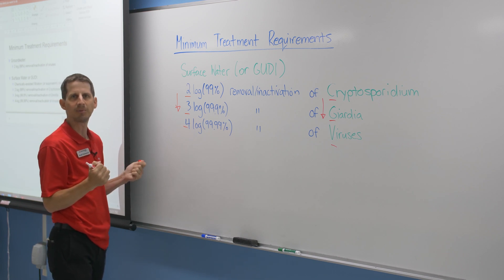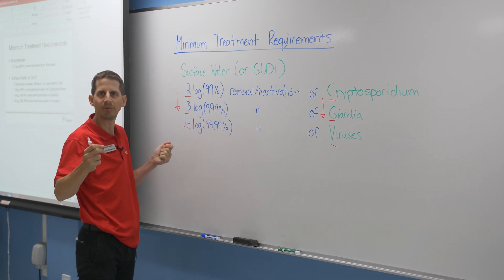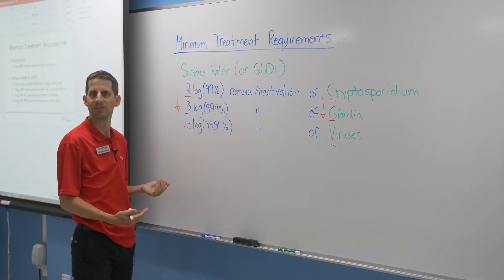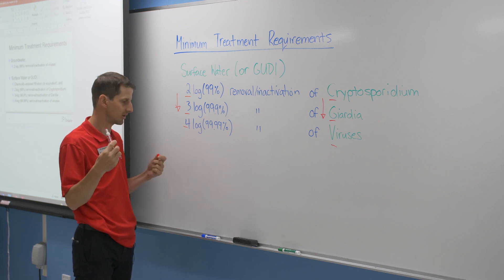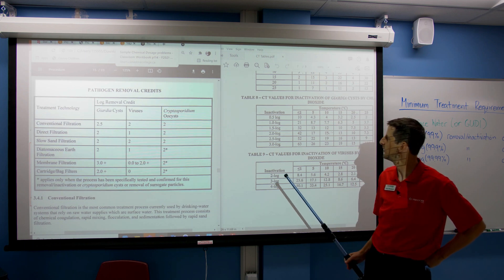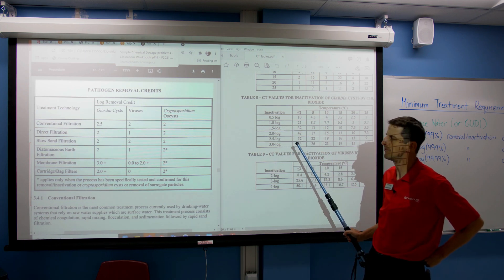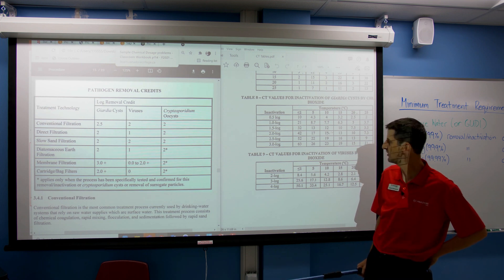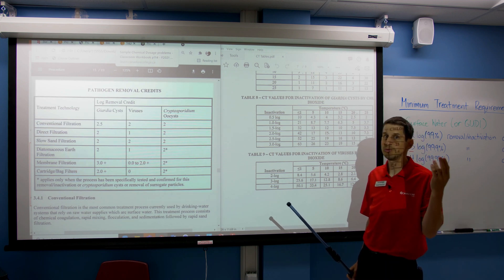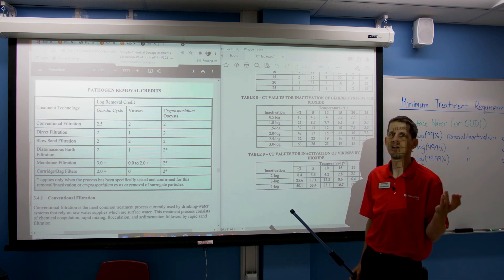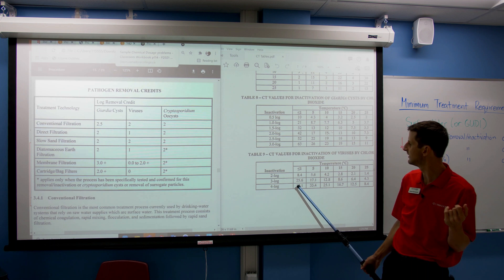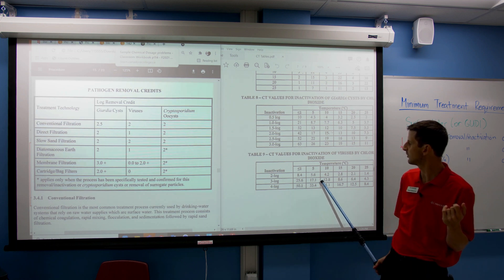Let's go back and look at the CT tables, because we have to choose what log removal we need. And we're thinking, well, if it's two, three, four, why is there 0.5 and 1.5? Let's make a little more sense of this. We have a selection of CT tables here, and you can see there are different log values for determining your contact time or concentration. We know we need four log removal of viruses, and this table here is looking at viruses — so we look at the four log removal value.